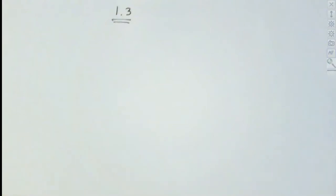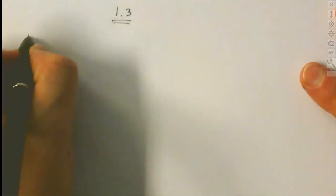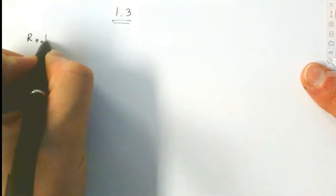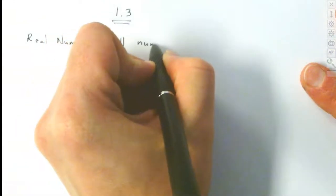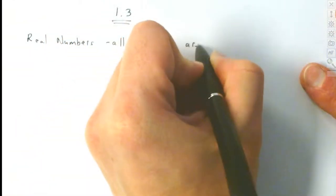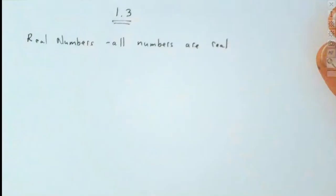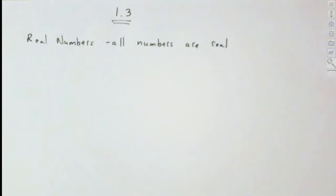What are real numbers? Well, real numbers are all numbers. All numbers that we can work with are real — just like if you were a biologist, all the animals fall under the animal kingdom. The only ones that aren't real are division by zero and negative square roots. So all the numbers that we work with are going to be real numbers.